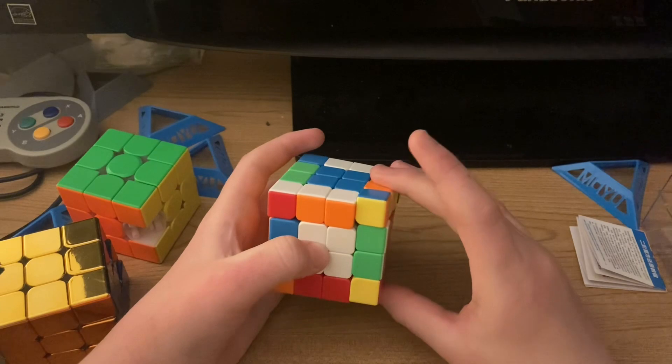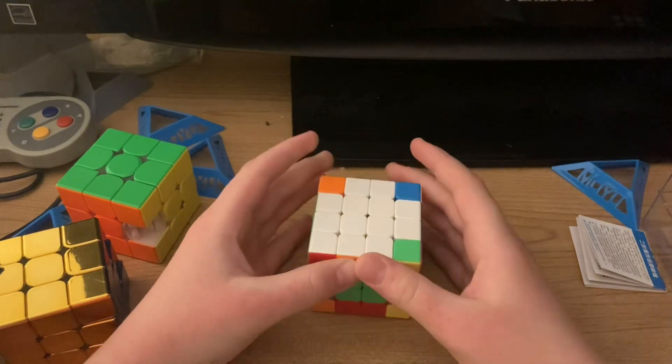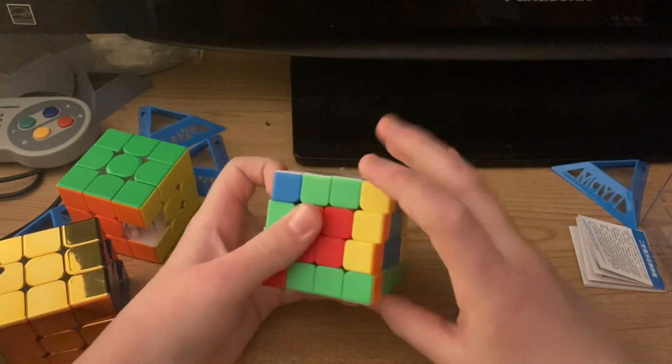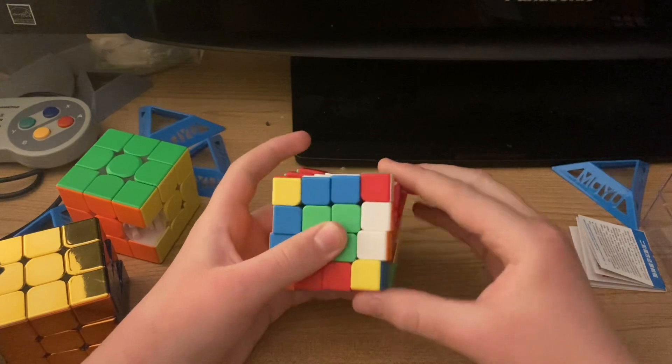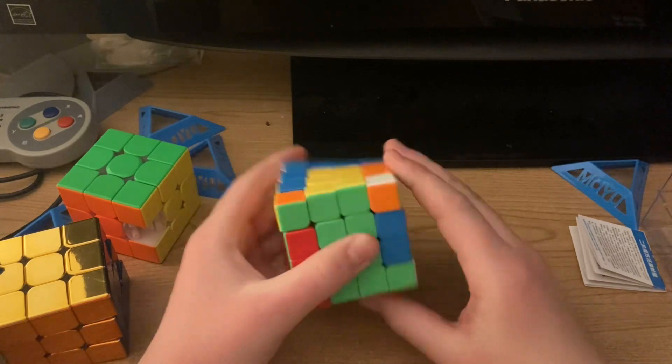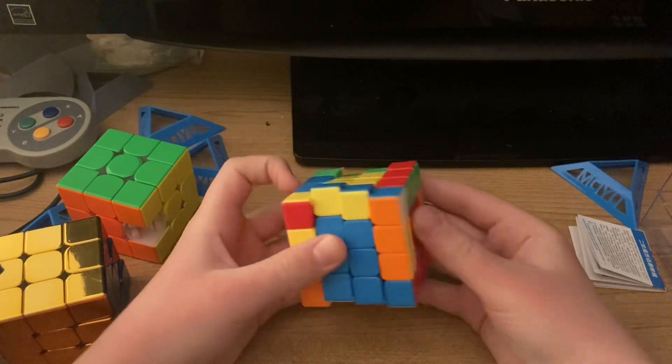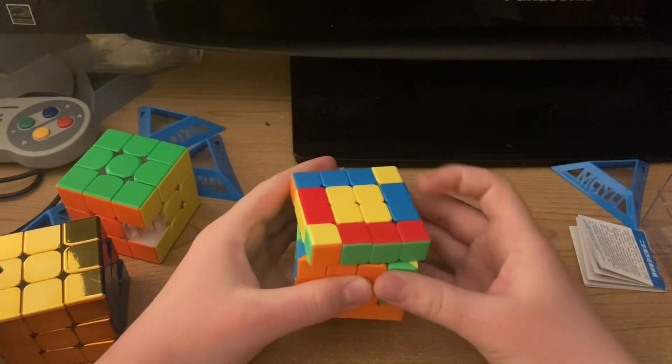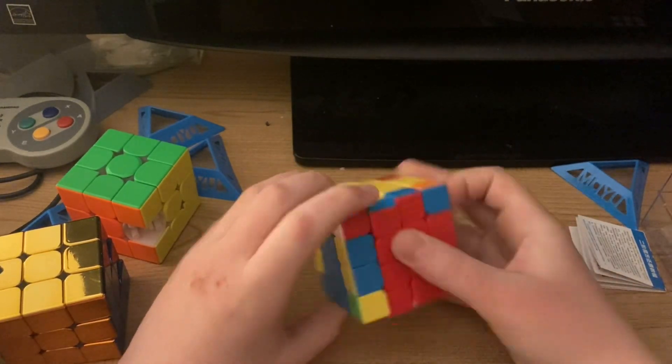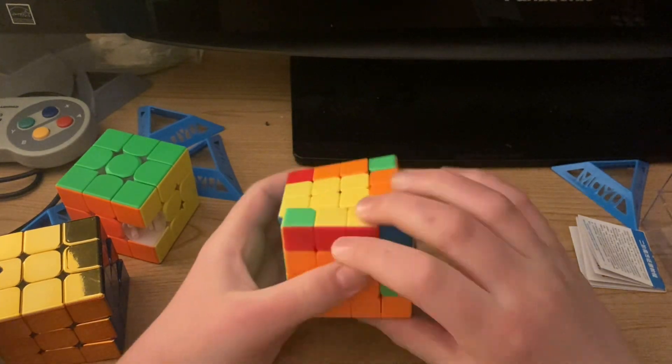Next step is the white cross. If you know 3x3, I recommend knowing 3x3. I'm not doing another 3x3 tutorial. If you learn 3x3, come back and this step will be easy to you. If you do know 3x3, great. You're going to do this like you do a 3x3. I do beginner's method, so I'm just going to proceed with that.